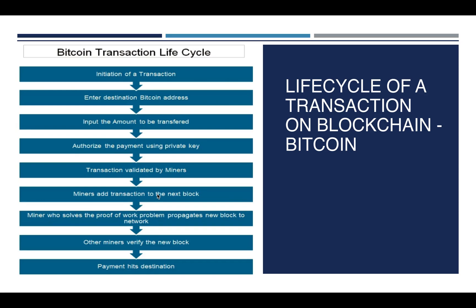Miners are the peers in the network. Miners solve the proof of work problem and propagate the new block to the network. Other miners verify the new block and the payment is sent to the destination address. This is the entire process of transferring Bitcoin from one account to another — miners mine a new block, and other miners in the network validate that block and add it to their chain.